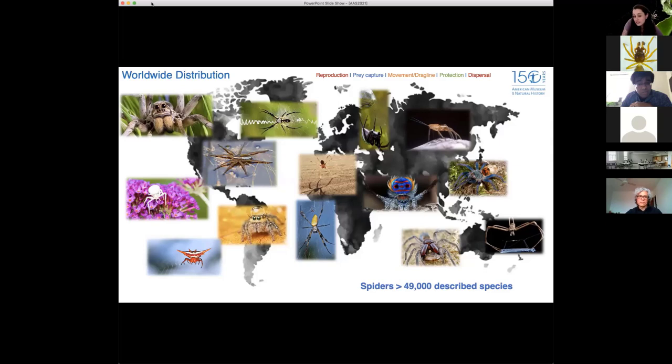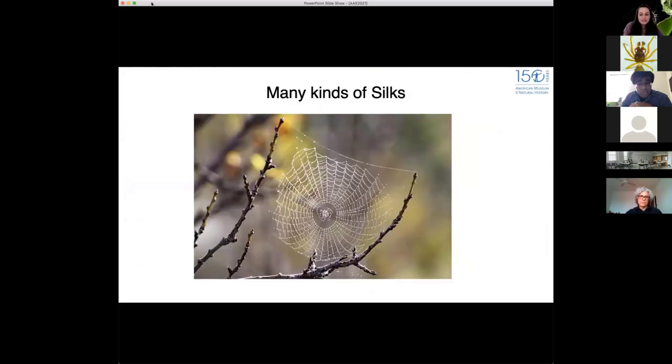One thing that does unify all spiders is the fact that they make silk, and we heard wonderful things about silk in the previous talk. But when we say silk, we definitely refer to many silk types, right? For example, when we look at an orb weaver, we can see that it's made of at least five different silk types. We have the frame and the radii, which is made of major ampullate silk. We have the attachment, which is made of piriform silk, and we also have the capture spiral, which is the main topic of this talk, that is usually a composite.